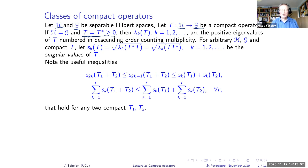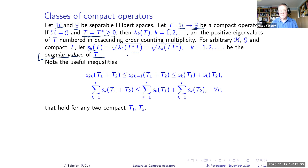In the general case, with arbitrary Hilbert spaces H and G, for a compact operator T we define singular values as the square root of the eigenvalues of the positive operator T*T. The non-zero eigenvalues of T*T and TT* are the same, so they give exactly the same singular values of the operator T.